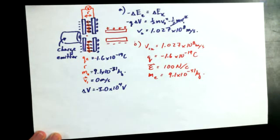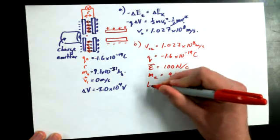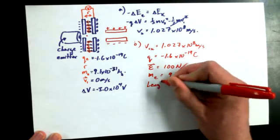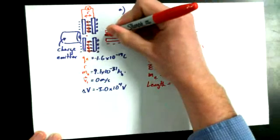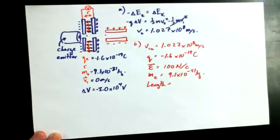Now, the new piece of information that you need to know is that the length, the length for these two plates, in other words, the distance between when the charge enters and when the charge exits these two parallel plates.